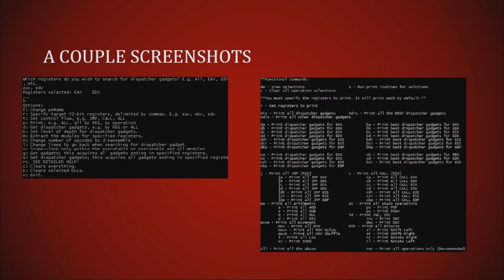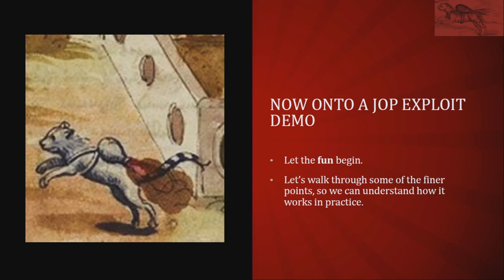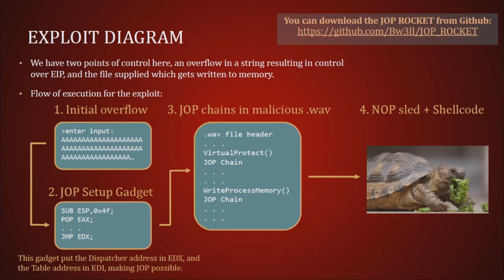There are a couple of screenshots showing the very minimalist UI. Now we're going to discuss a JOP exploit to gain an understanding of how all this comes into play. This is a wave reader that prints out some information on a wave file — we provide it with a malformed wave file. Initially we have an overflow just to set things in motion, then we set up our JOP gadgets, set up the dispatcher gadget, set up the dispatch table, and then we do our JOP chain. We're going to bypass DEP data execution prevention — we call VirtualProtect, we call WriteProcessMemory. Then we do our NOP sled, then our shellcode, and then profit.